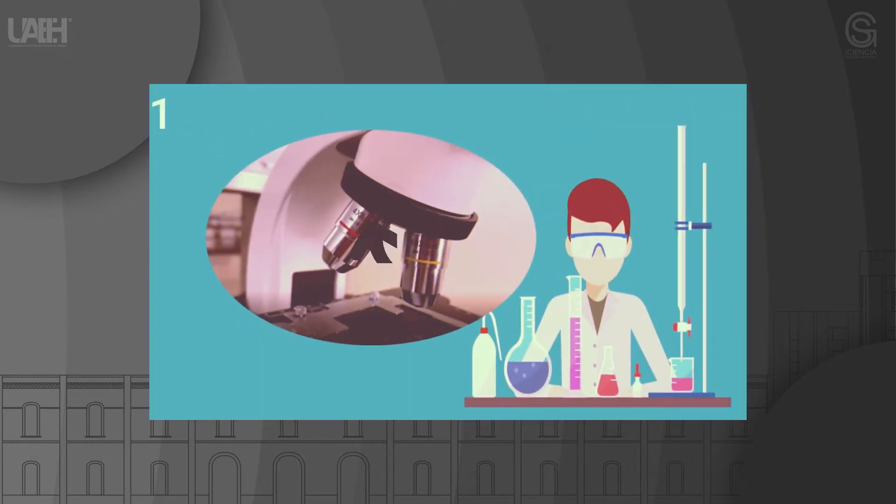Step 1: Using the nosepiece of the microscope, position the objective with the lowest magnification. The observation always starts with minimum magnification, from which it is increased until reaching the desired magnification level.